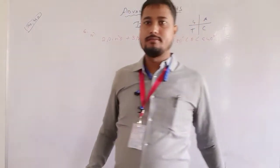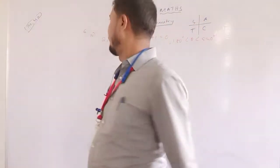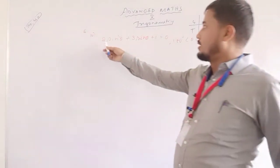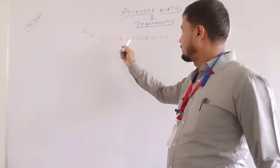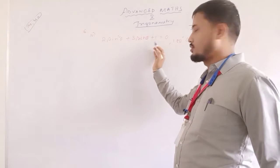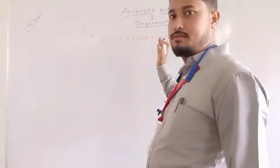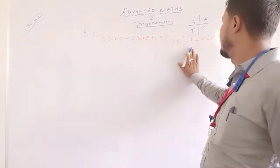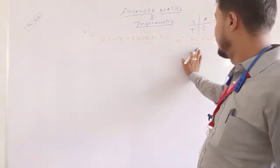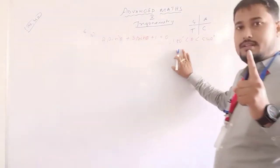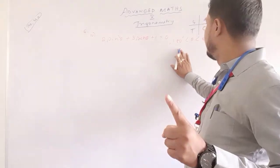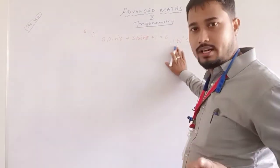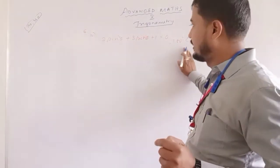Next question, question number 64. The question is: given 2sin²θ + 3sinθ + 1 = 0. The condition is 180° < θ < 540°, that is, theta lies between 180 and 540, more than 180 and less than 540.